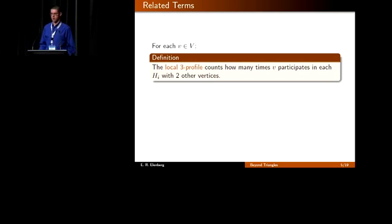So far, I've defined the global three profile, which takes a graph and outputs four numbers. But there are also related terms that give four numbers for each vertex. The local three profile counts the number of times a vertex V participates in subgraphs with two other vertices.